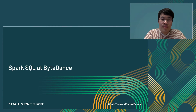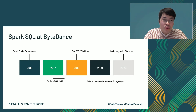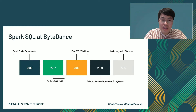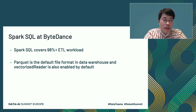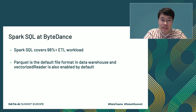The first part: Spark SQL at ByteDance. In 2016, we started to use Spark SQL in small-scale experiments. In the next year, we used Spark SQL in ad-hoc workloads. And in 2018, we started to use Spark SQL in ETL workloads. In 2019, we deployed Spark SQL in full production and started to migrate from Hive to Spark SQL. This year, Spark SQL is the main engine in our data warehouse. By now, Spark SQL covers 98% of ETL workloads at ByteDance. Parquet is the default file format in the data warehouse, and the vectorized reader is also enabled by default. We found that the vectorized reader can improve Spark's performance greatly — in many cases, by 50%.